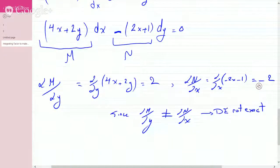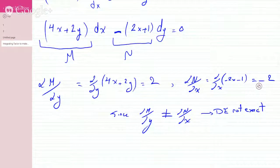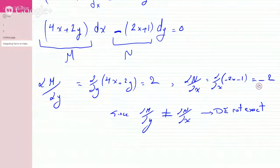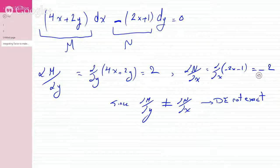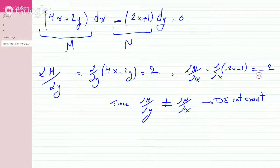If it's not exact, we can forcefully make it exact by multiplying it by an integrating factor. It wouldn't make sense for an integrating factor to just be e to the minus 2 with no variable.